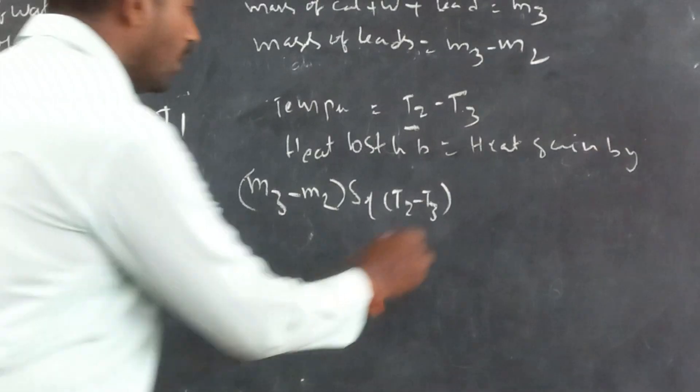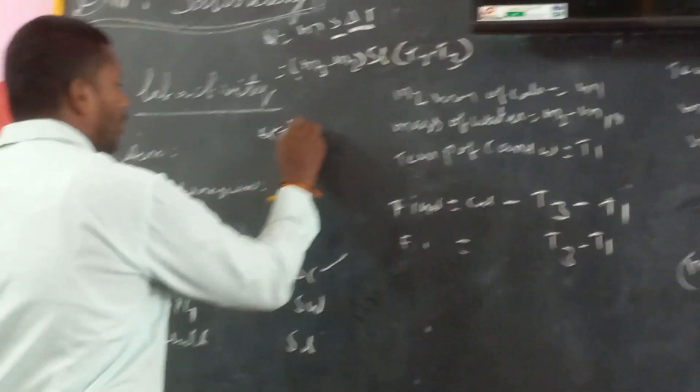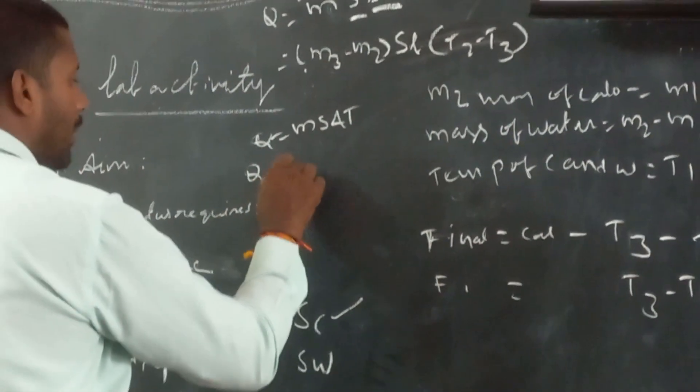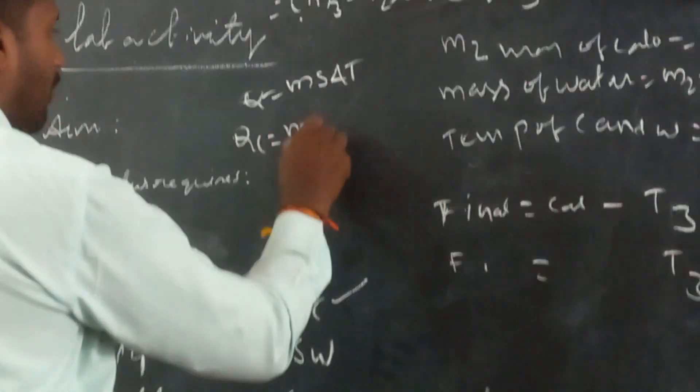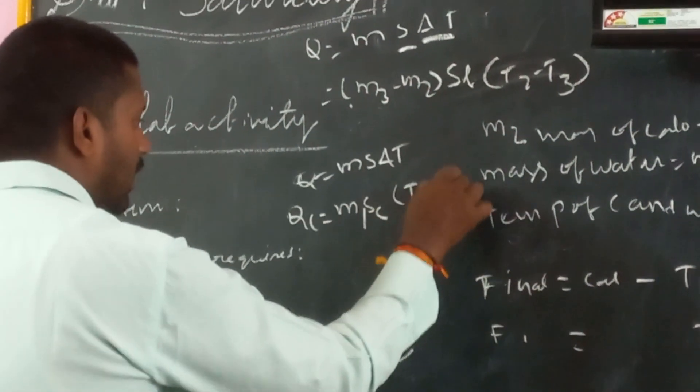Then heat gain by cold body. What about calorimeter? Calorimeter. Q equal to MS delta T. QC. Calorimeter heat is: M is M1. S is SC. Temperature is T3 minus T1.